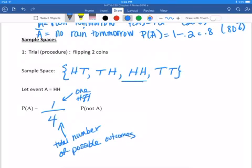So not A, meaning not head heads, would be everything else, which we can just count. There would be three out of four. Now the other way we could see that is it would be one minus one-fourth, which is three-fourths. Okay, so we'll see compliments later on throughout this chapter.